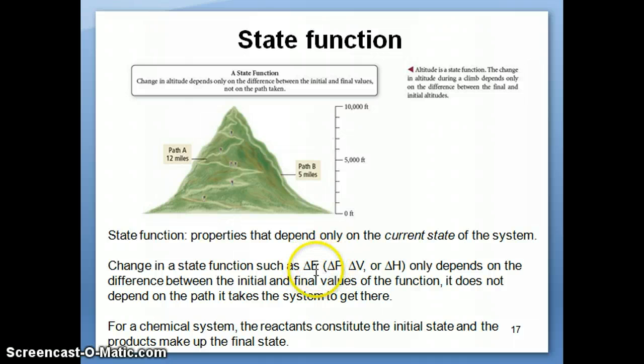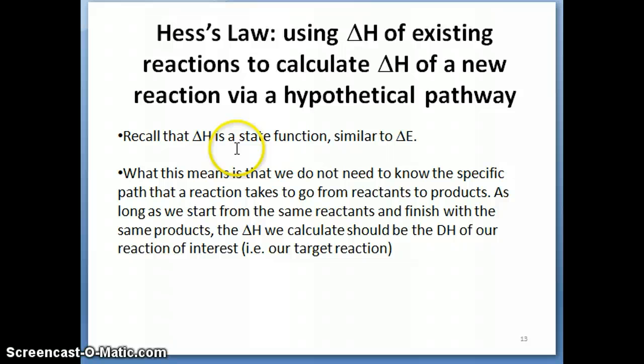I mentioned that examples of state functions are delta E but also delta H, enthalpy. That's where this concept becomes useful going back to this slide where we talk about Hess's law. The idea of Hess's law is that you want to use this state function property of delta H to come up with a hypothetical pathway, basically a path that you create on your own to calculate the delta H of a new reaction based on delta H of existing reactions.